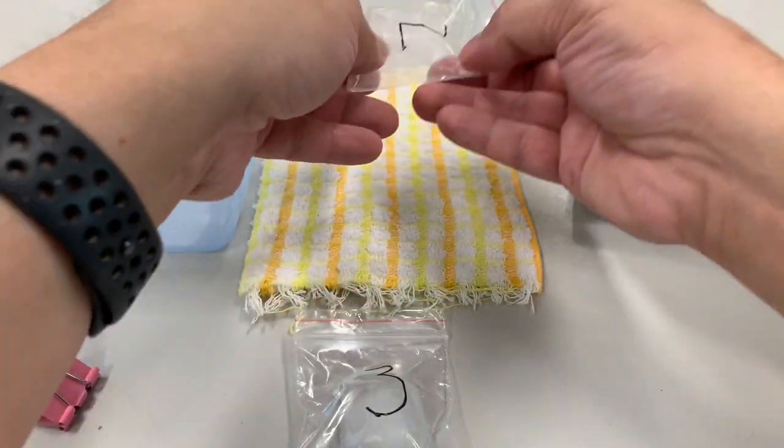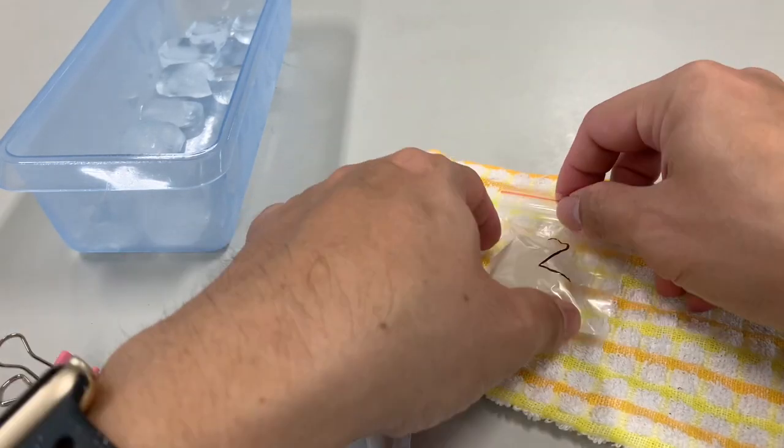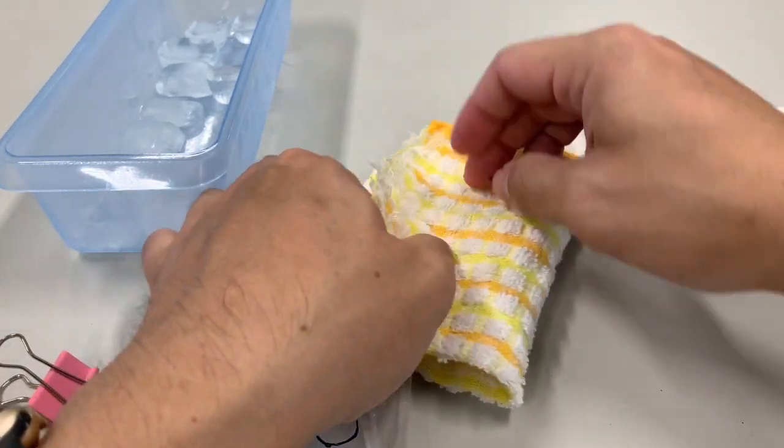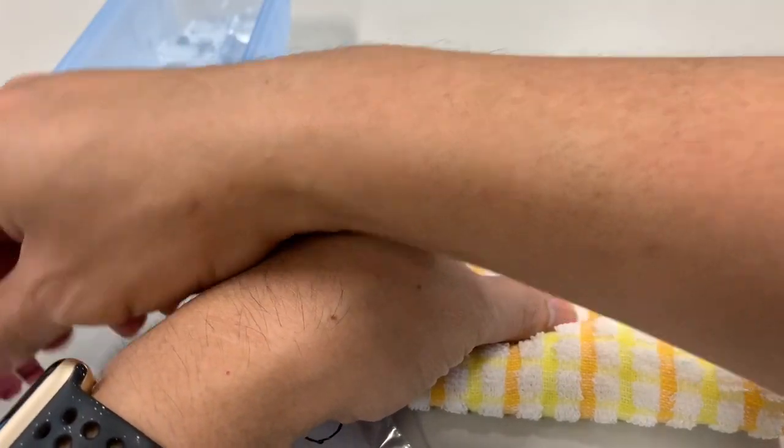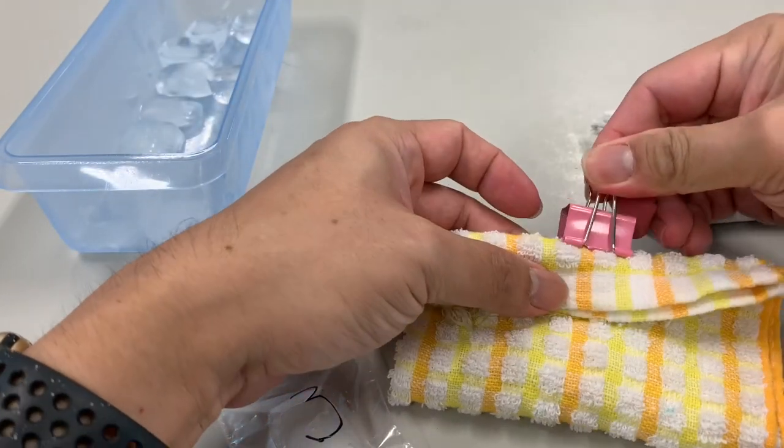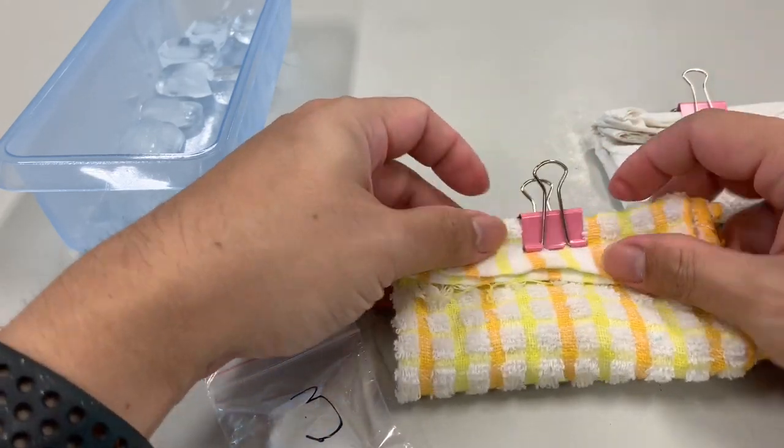Then we put the second ice cube. Again, same thing into the middle of this kitchen towel. We fold it and then we're gonna clip it with a paper clip or binder clip. You can also use a pack at home if you do not have this clip.